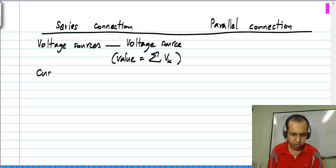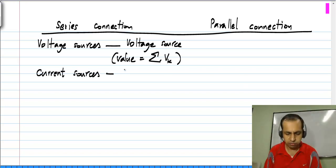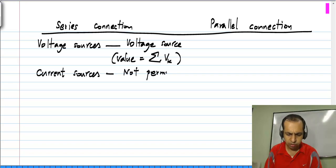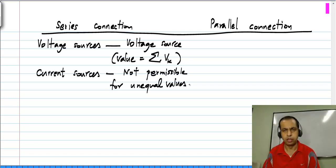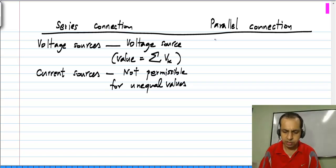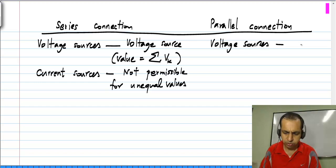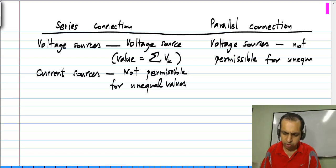If you take current sources, a series connection of current sources is not permissible for unequal values. And the parallel connection case is the counterpart of this — a parallel connection of voltage sources is not permissible for unequal values.